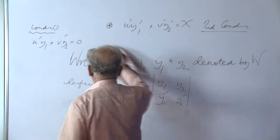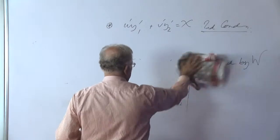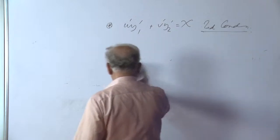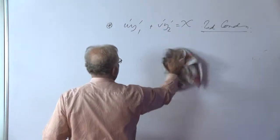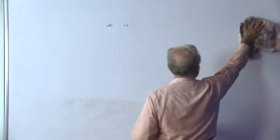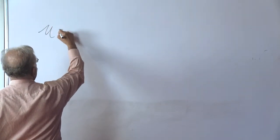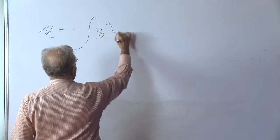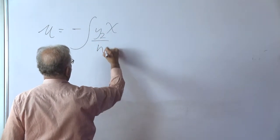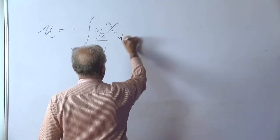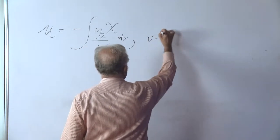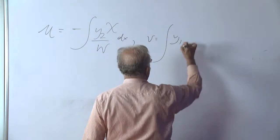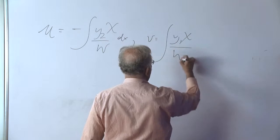The solutions are written down as follows. U is equal to minus integral y2 capital X over the Wronskian integrated with respect to x and v is equal to integral y1 capital X over Wronskian dx.